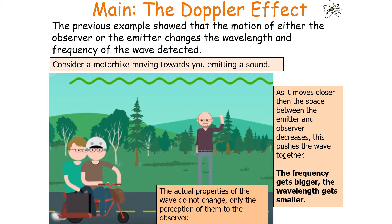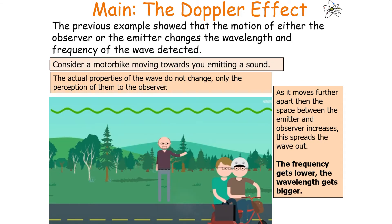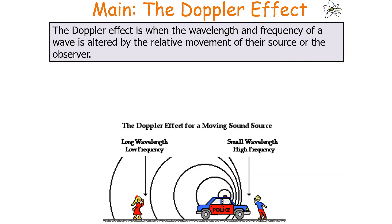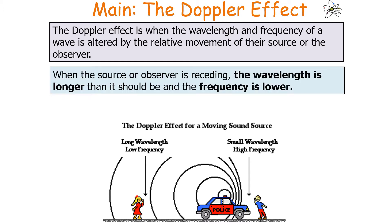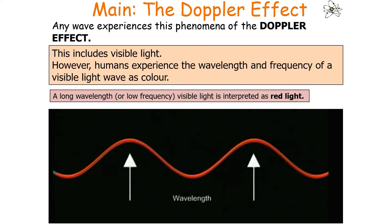Consider a motorbike moving towards you emitting a sound. As it moves closer, the space between the emitter and observer decreases, pushing the wavelength together, so the frequency gets bigger and the wavelength gets smaller. If there's no relative change between emitter and observer, there's no Doppler effect. If the source moves further away, the space increases and the wave spreads out — frequency gets lower and wavelength gets bigger. When receding, wavelength is longer and frequency is lower; when approaching, wavelength is shorter and frequency is higher.